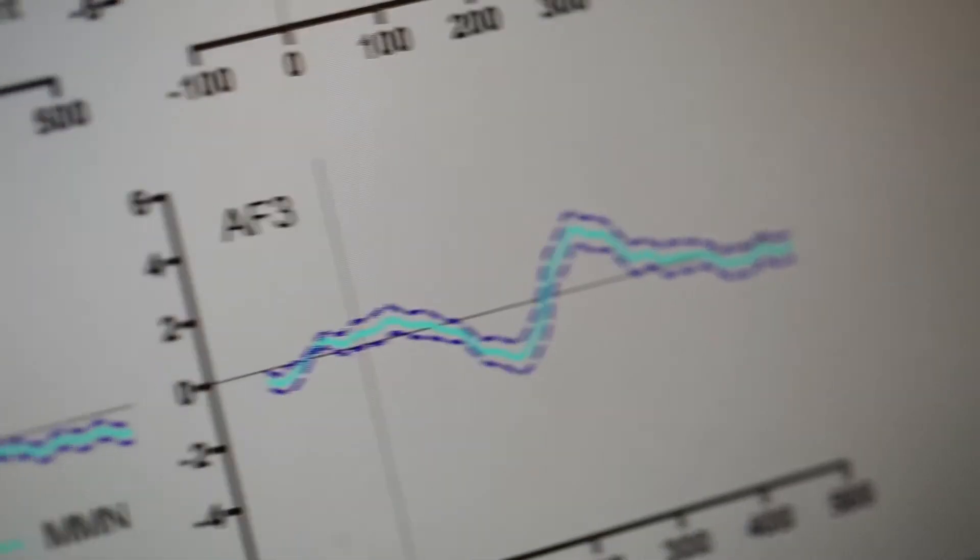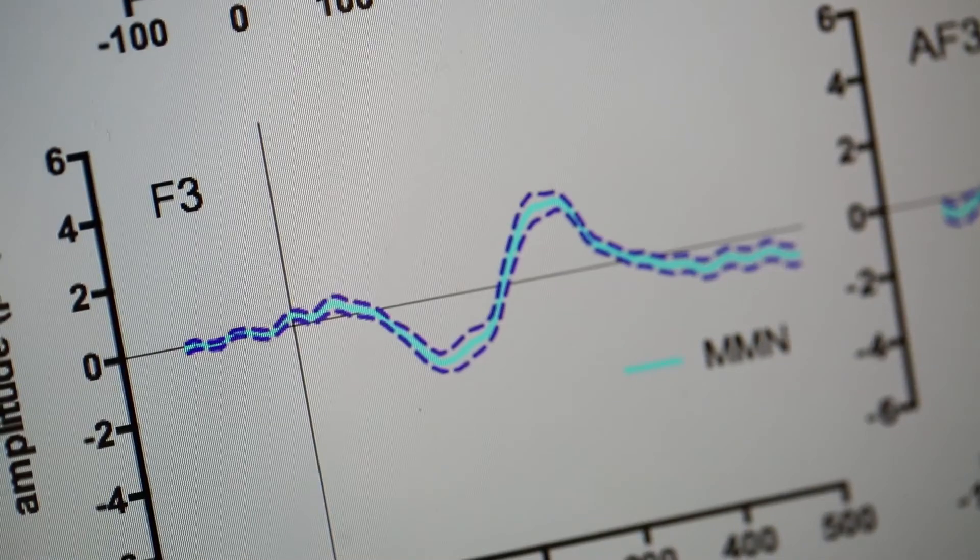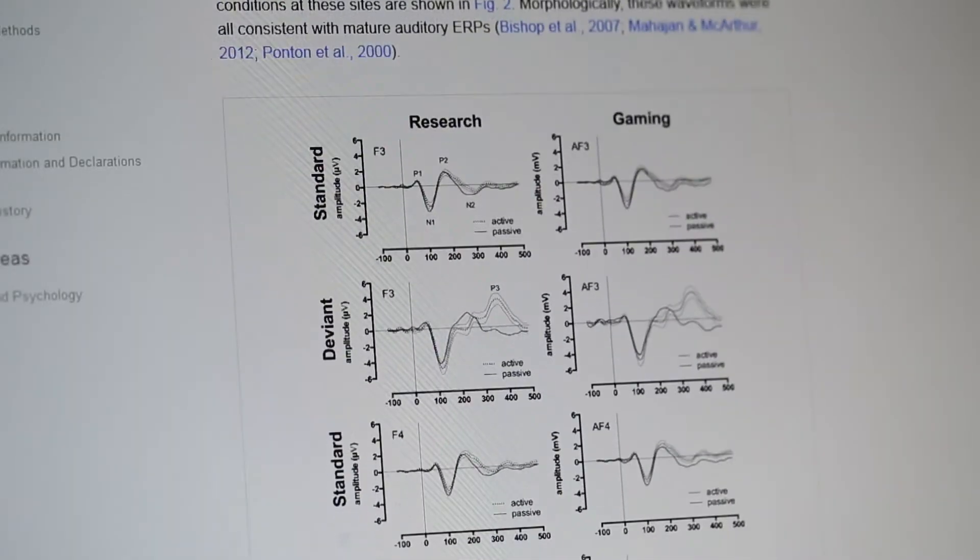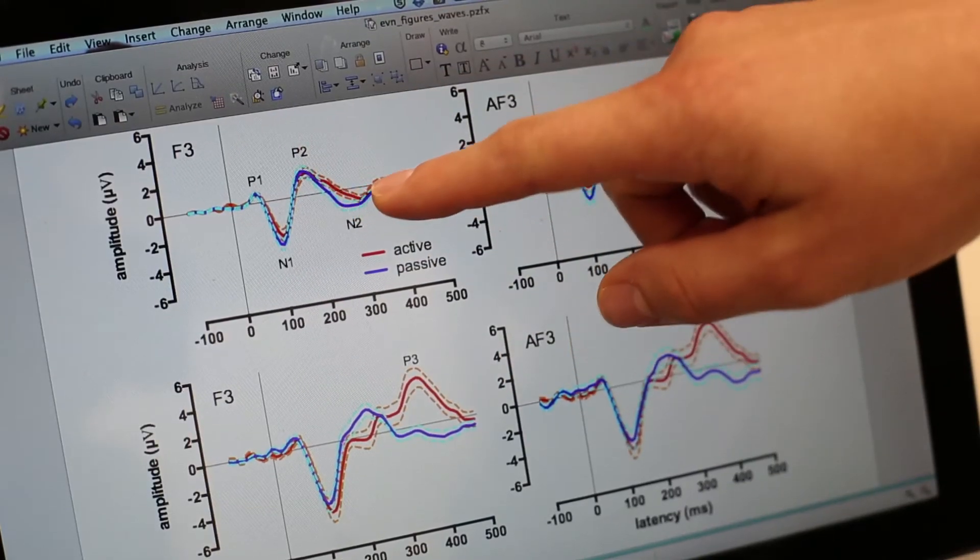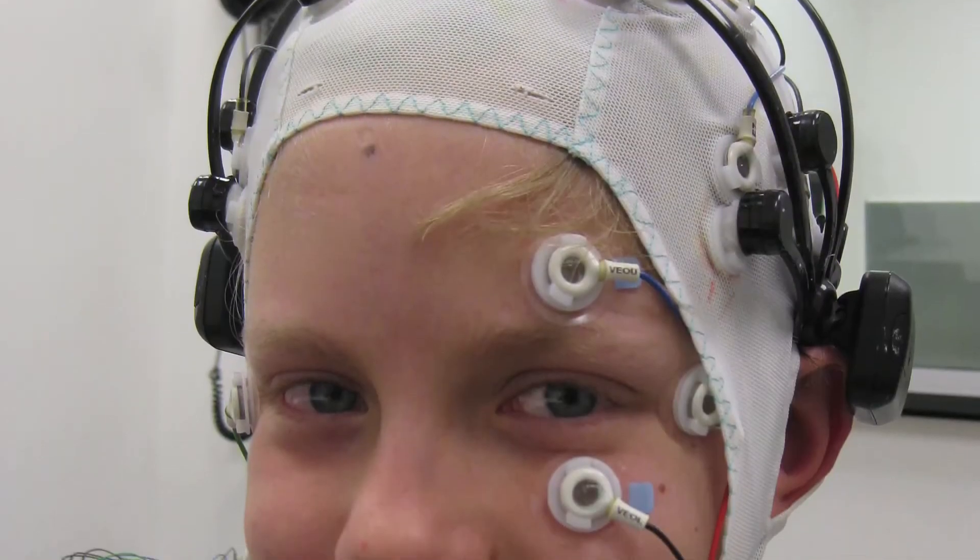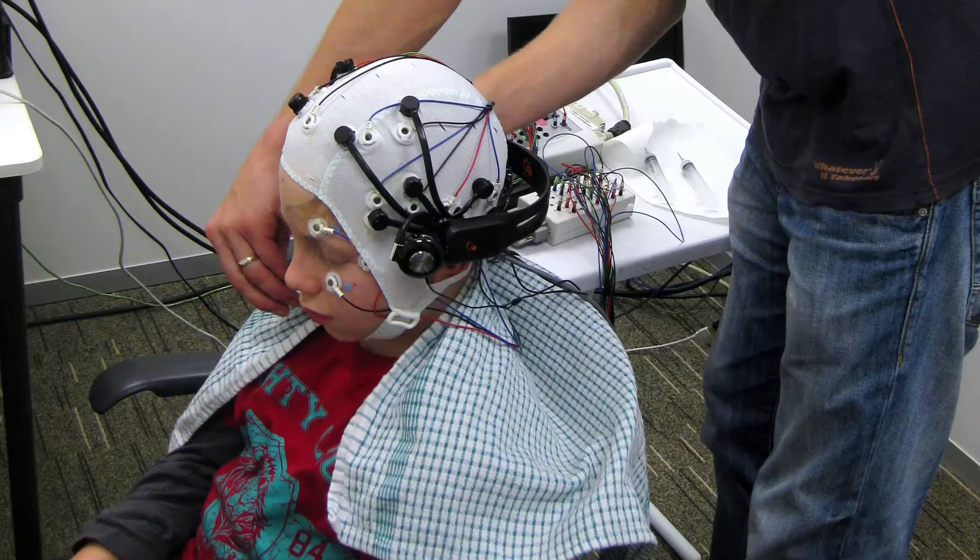This allows us to get a much better idea of what typical auditory processing in the brain looks like, and therefore we can better define what atypical processing looks like. We could screen the children who have parents who've got a history of dyslexia.